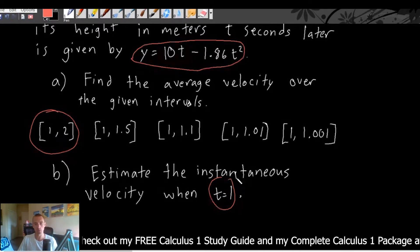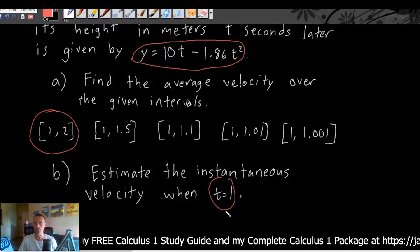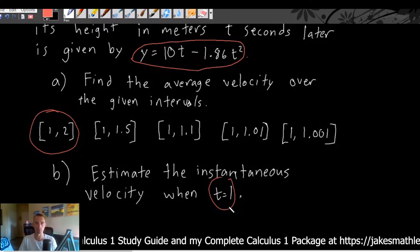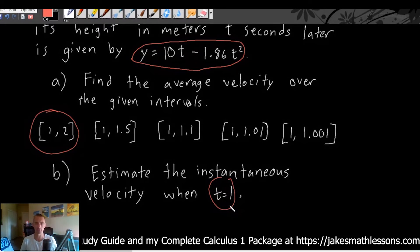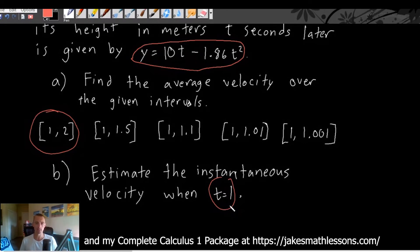Whereas in part B, we're being asked to find the instantaneous velocity at one specific time point. So that's a very important difference between instantaneous velocity and average velocity.